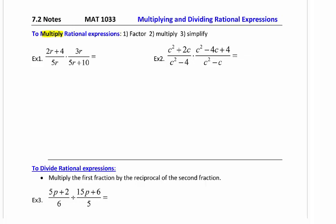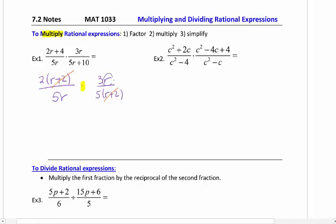So we're going to start off with number 1. It is a multiplication problem, so I can't cross out any like terms right now. That's really important. It has to be in factored form. So I'm going to pull out a GCF in the numerator of 2, and in the denominator of the second rational expression, I'm going to pull out a 5. Now that it's in factored form and it's a multiplication problem, I can cancel like factors. So I can cross out the r plus 2s, and this is where you need to be careful.